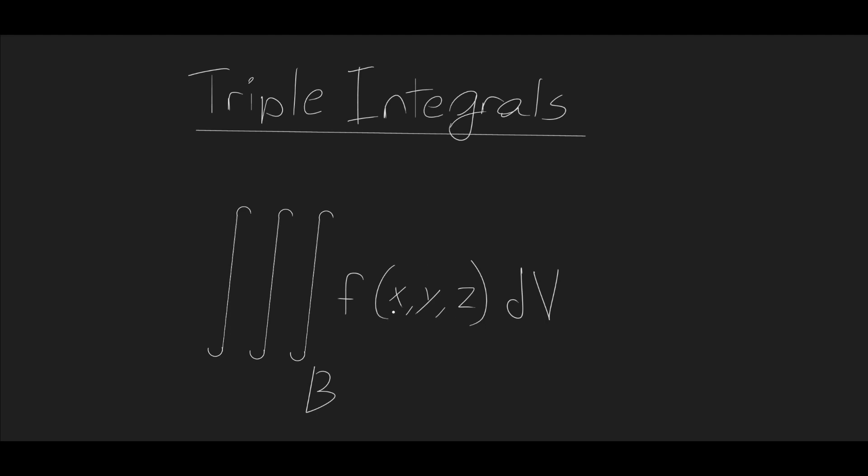For every point in three dimensions, there's going to be a value, and we're going to be integrating, instead of area, volume over a volume. We're going to have dv is a small piece of volume, and b is our bounds on that volume. So, let's go ahead and look at how to do it.